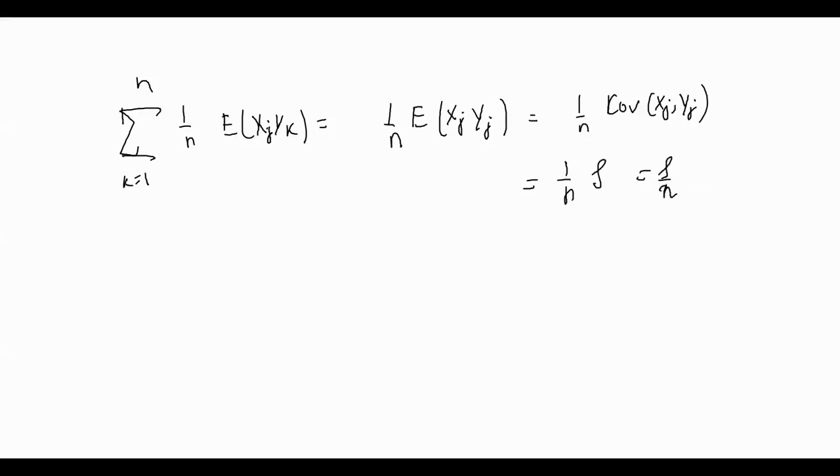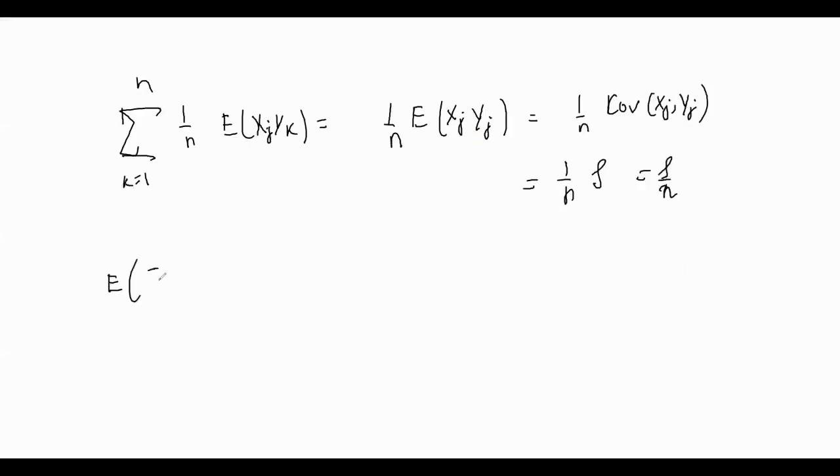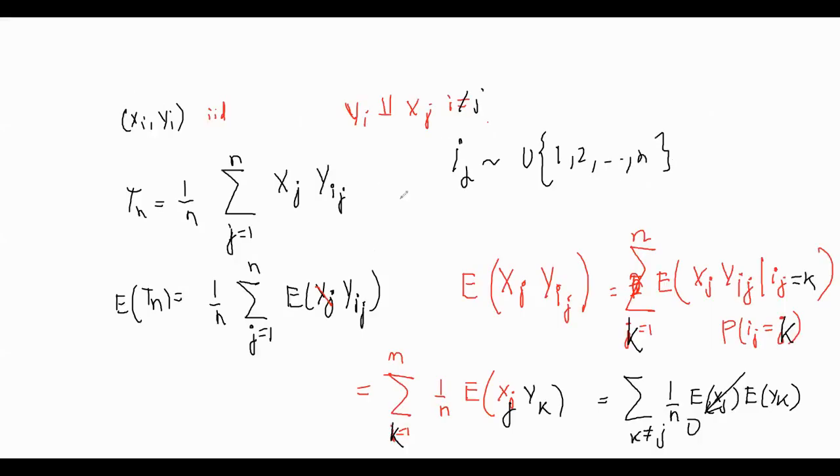So what do you get? You get that expectation of that corresponding T_n is equal to (1/n) summation of j from 1 to n, expectation of X_j Y_j is equal to (1/n) summation of j from 1 to n, ρ/n. So what we get, we get it's equal to ρ/n. That's it. So therefore this is the solution, and therefore the expected value is actually ρ/n, and that's what we are looking for.